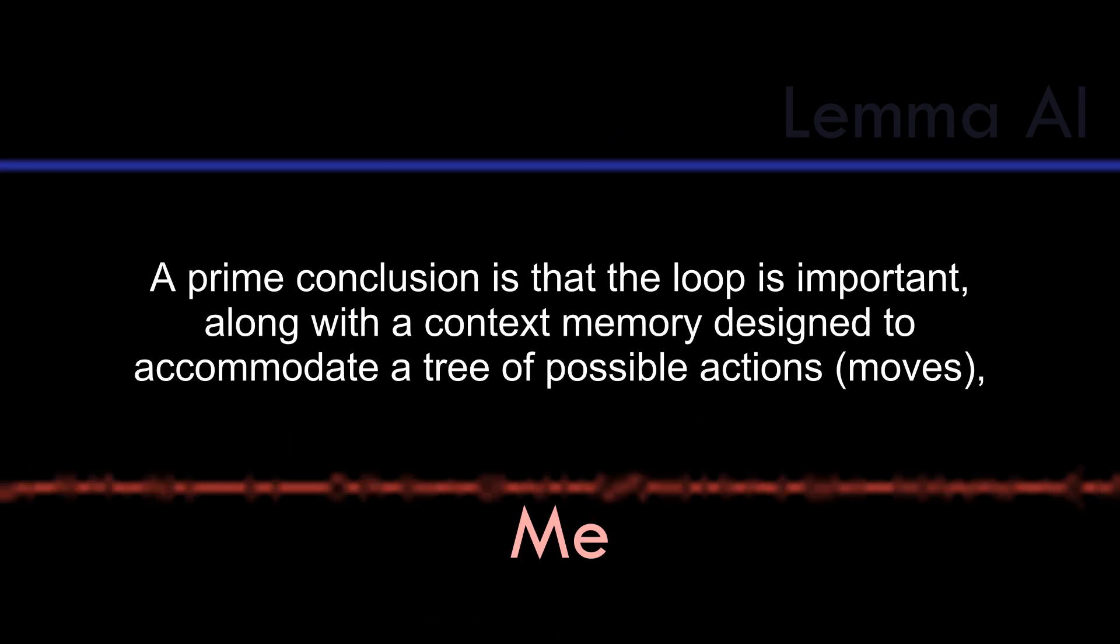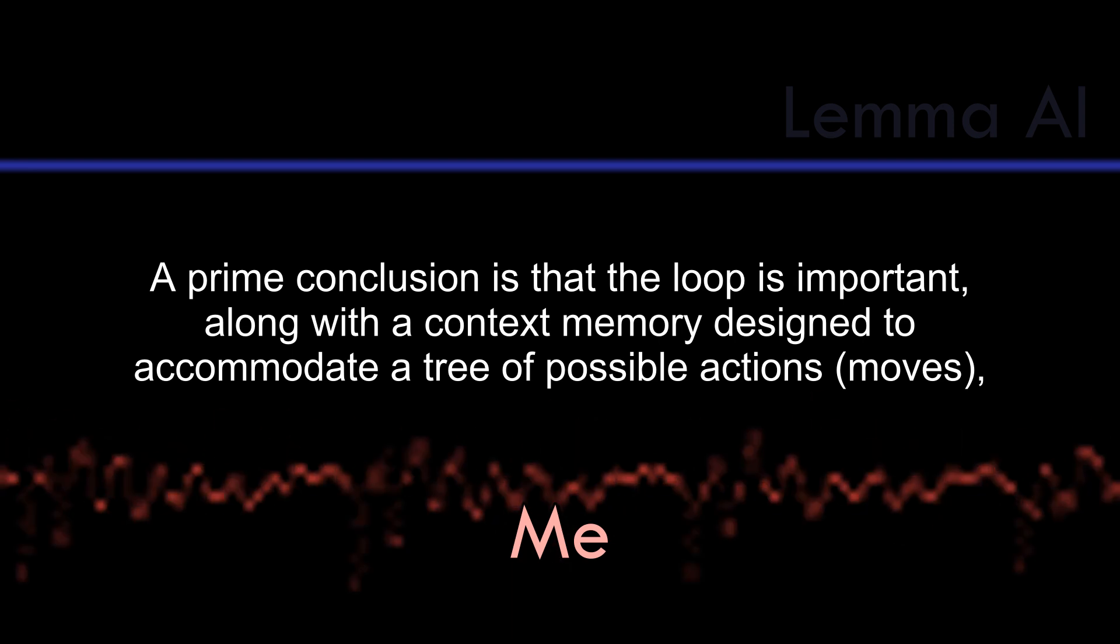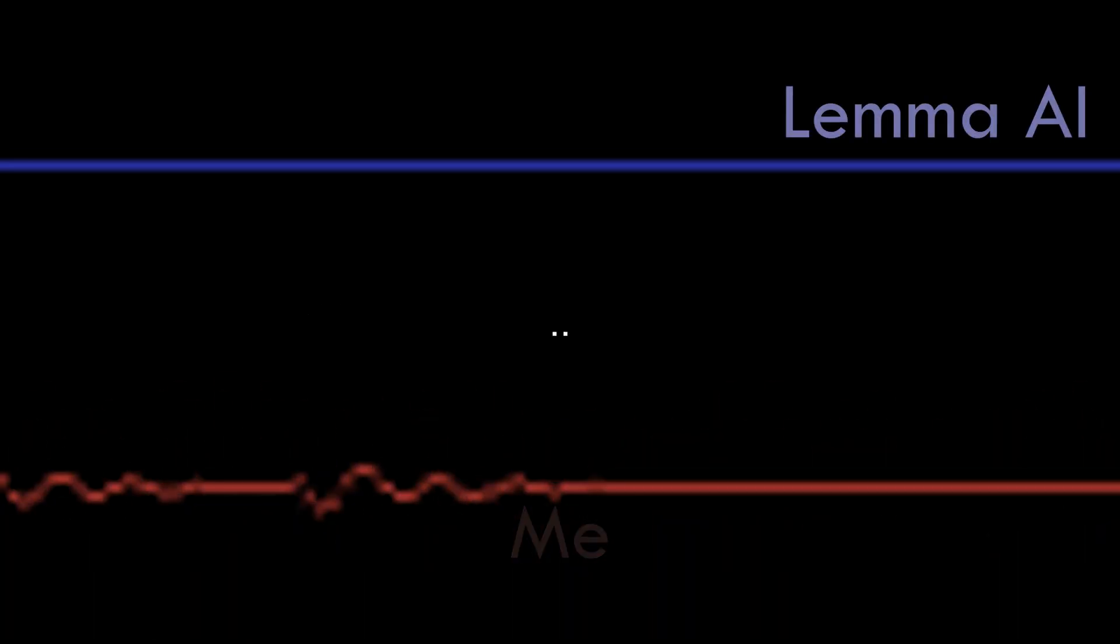A prime conclusion is that the loop is important, along with a context memory designed to accommodate a tree of possible actions moves, either by human or by AI itself.